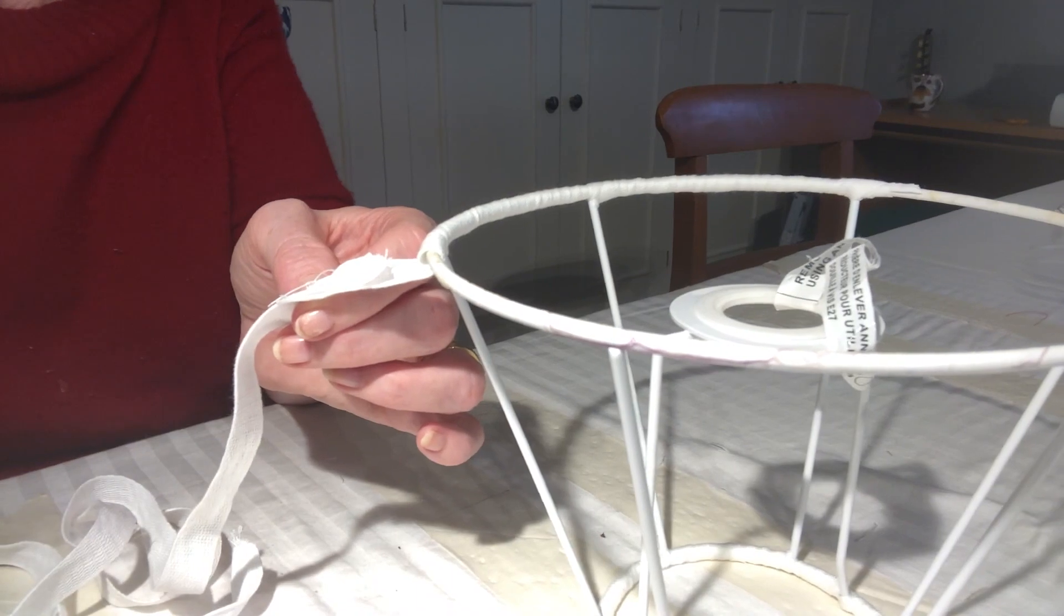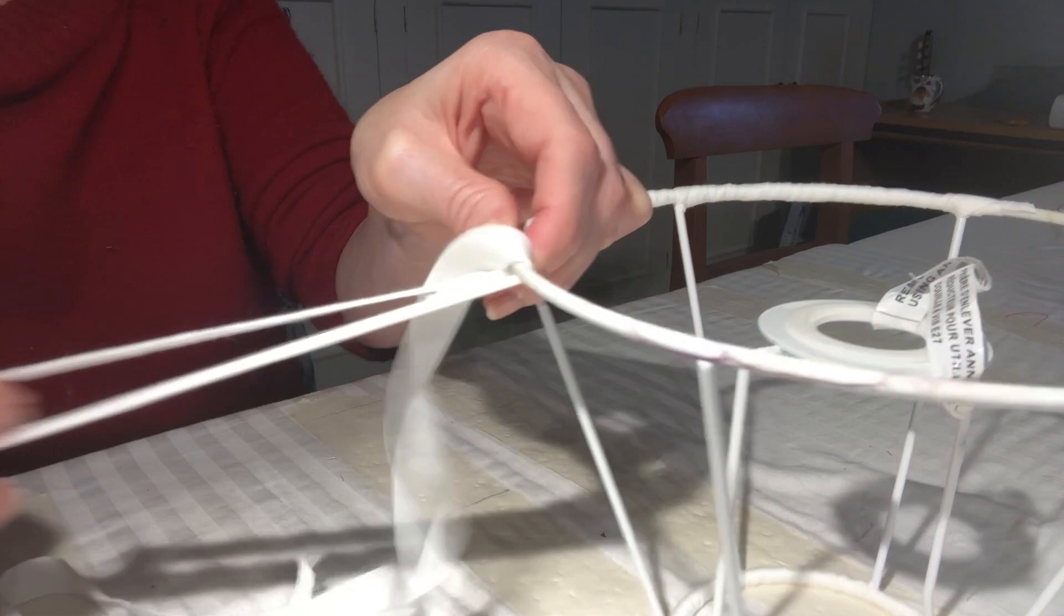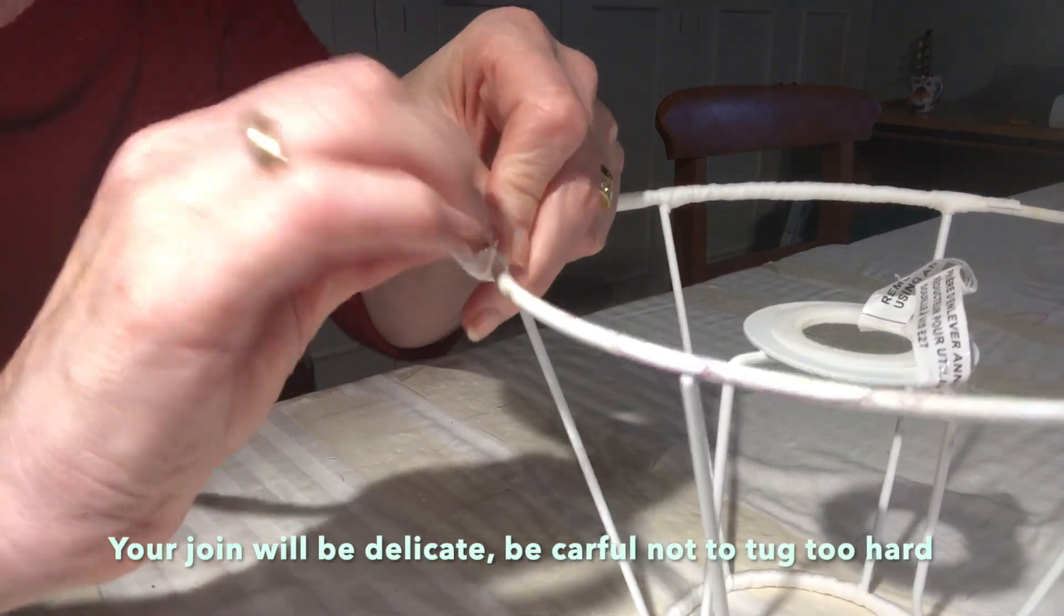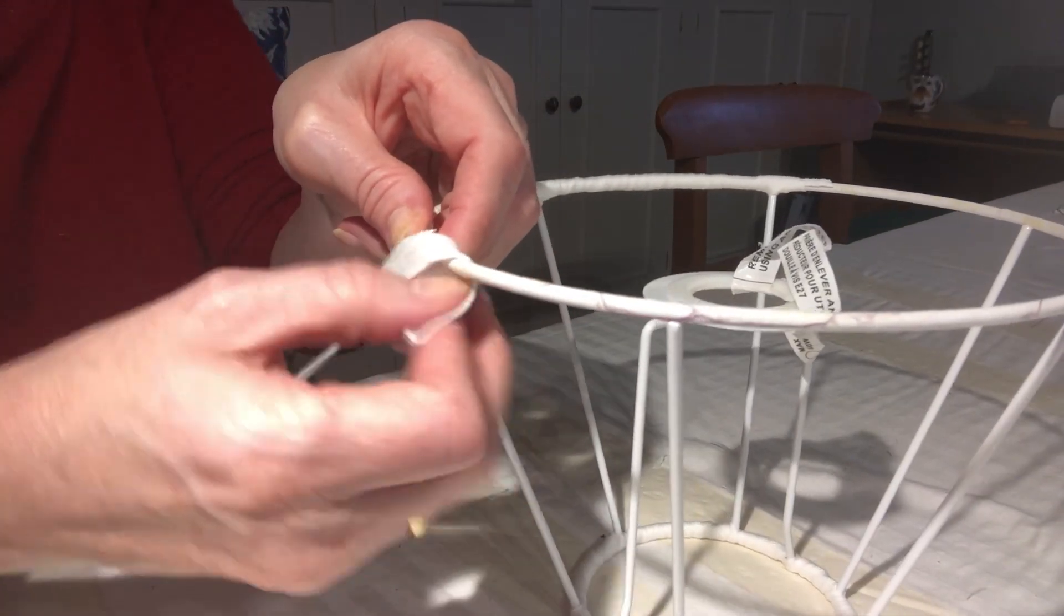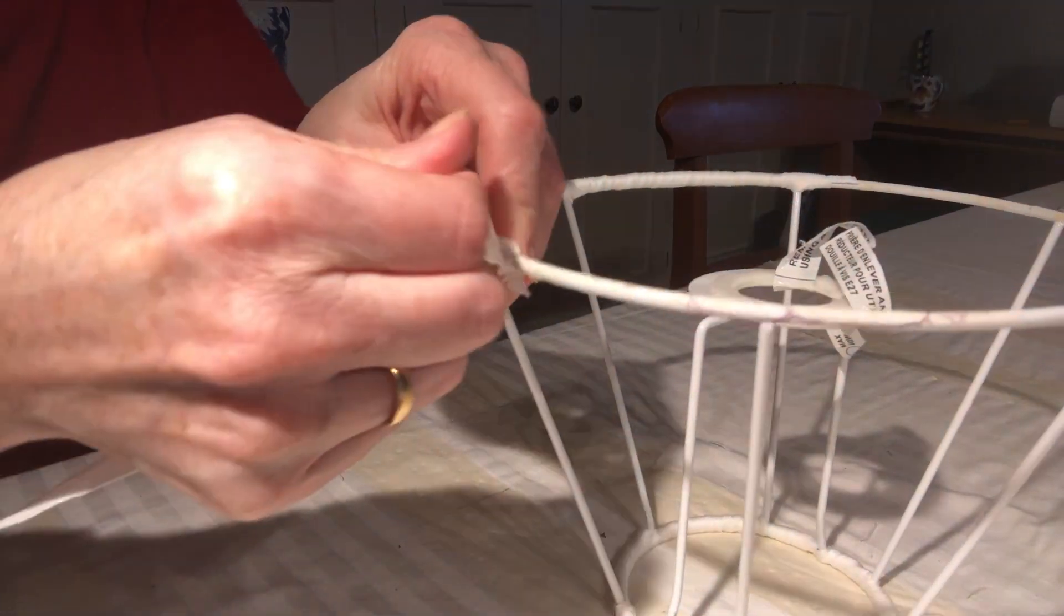Your join will be delicate, so be careful not to tug too hard as you continue wrapping the ring. You might want to wrap the tape a little closer at this point to secure your join, tucking in the tails as you go. Then carry on wrapping tightly at a 45-degree angle with a 50% overlap.